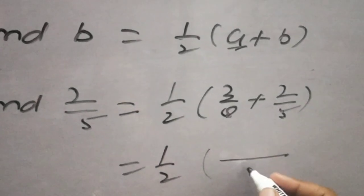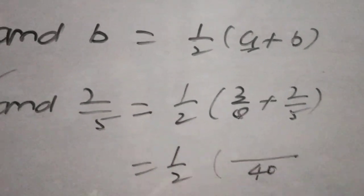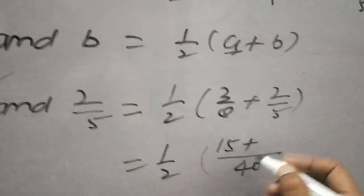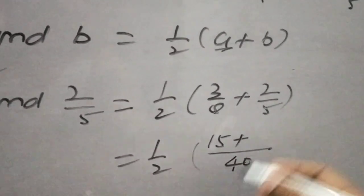The LCM is 40. Converting to common denominator: 3 upon 8 becomes 15 upon 40, and 2 upon 5 becomes 16 upon 40.